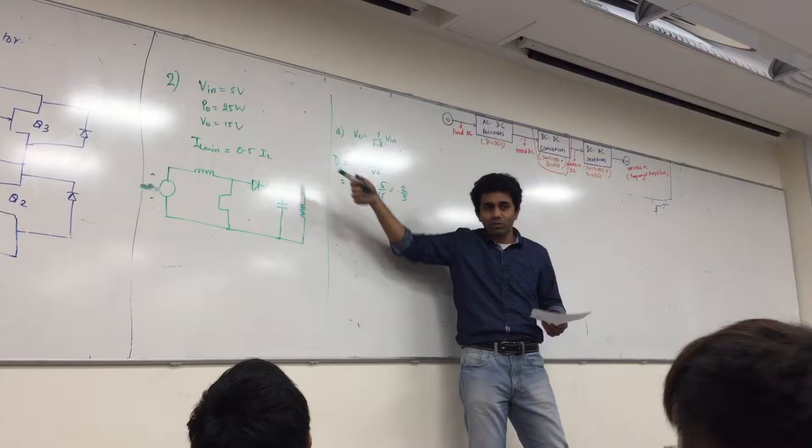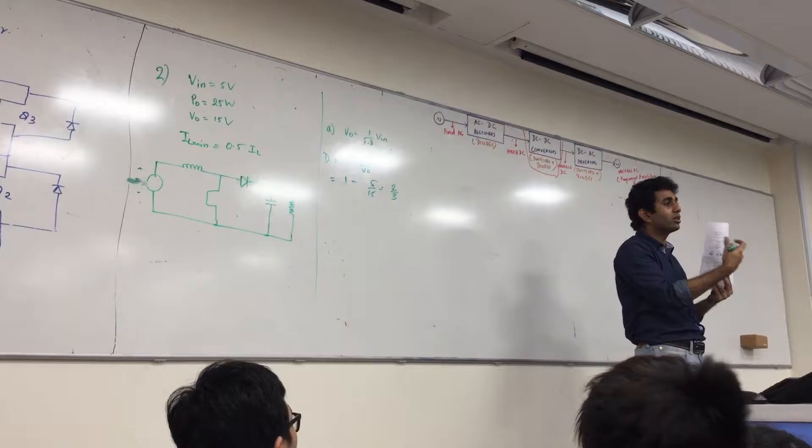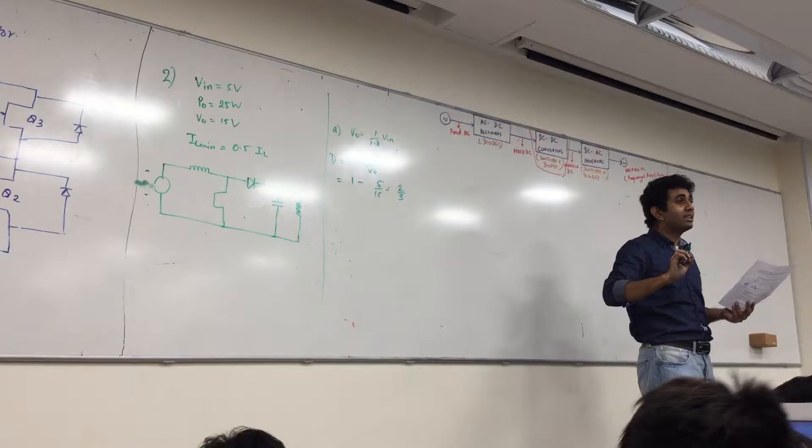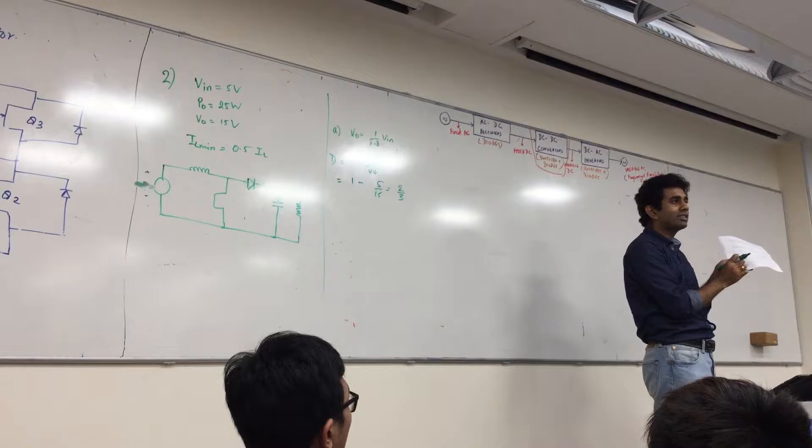which will satisfy IL minus 0.5 IL. So it is definitely not your boundary condition. Right? The only way IL-min can reach boundary condition is if IL is 0 and IL minus 0.5 into 0 which means 0. Right? In this case, whatever the part B is, the minimum value of inductance required is not for your boundary condition. Boundary condition comes later on.